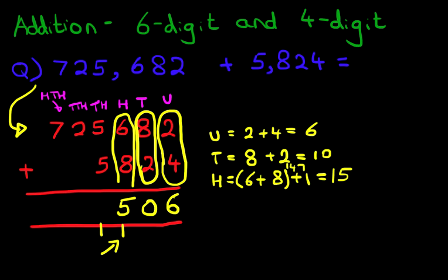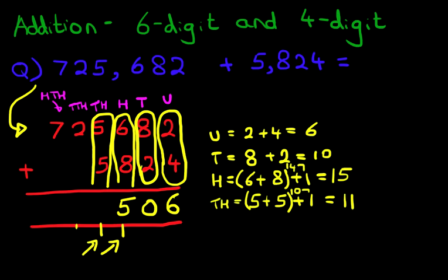We're now going to add the thousands column. And don't forget the 1 here. Thousands is 5 plus 5 plus the 1 we are carrying. Let's put a bracket around them. 5 plus 5 is 10 plus the 1 is 11. We've got 1 here and 1 here.